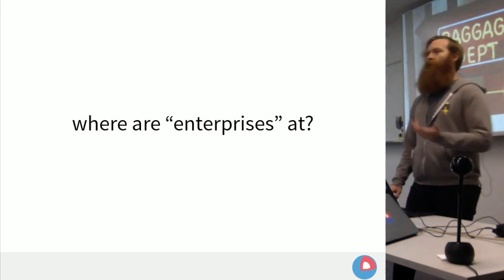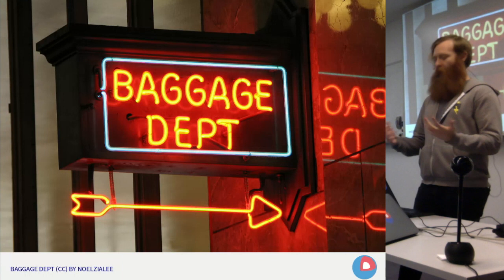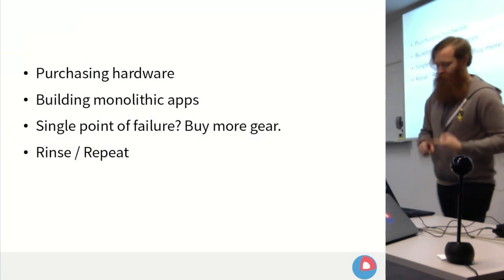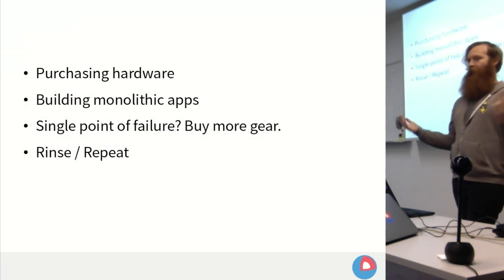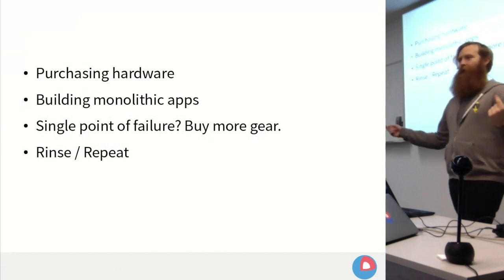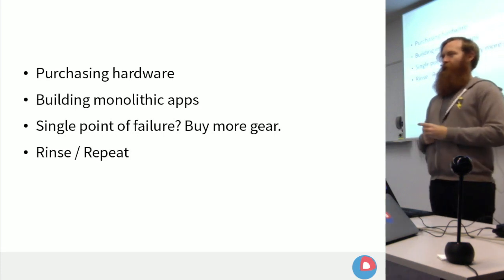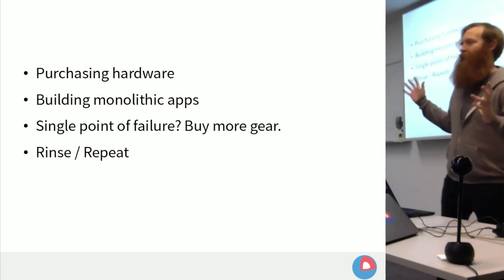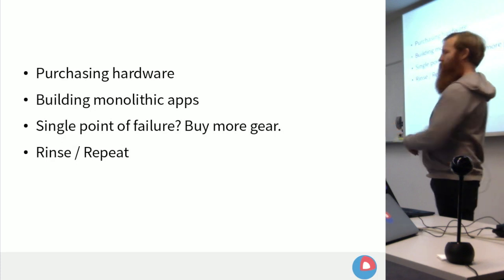When you start to look at where enterprises are actually at, the first thing you realize is that they have a lot of baggage. They're doing things in really non-optimal ways: you purchase hardware, you build this monolithic app, the monolithic app has a failure or runs slow, so the solution is you just buy more hardware — and you keep doing this. Then the people who were really good at maintaining that application leave, some kid fresh out of college walks in, starts tearing out their hair, and the solution is: the people before you just bought more hardware, so we're just going to keep doing that. You rinse and repeat.